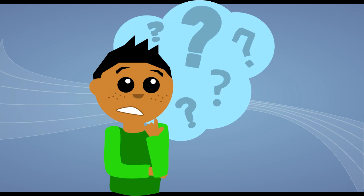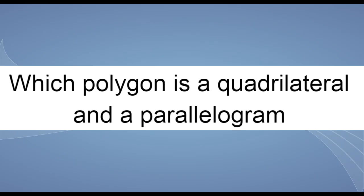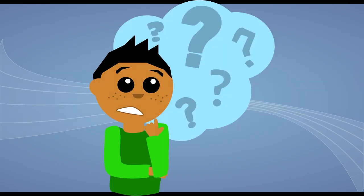When you first start learning geometry, you'll learn a lot of terms like parallelogram, quadrilateral, polygon, and you might see problems along the lines of which polygon is a quadrilateral and a parallelogram, and it can get very, very confusing. So what I hope to do with this video is help you understand what all of these words mean.